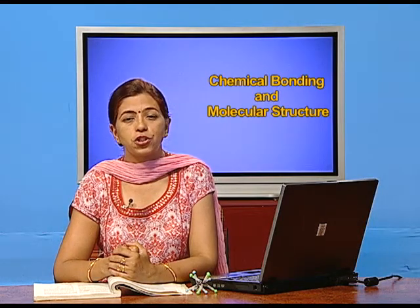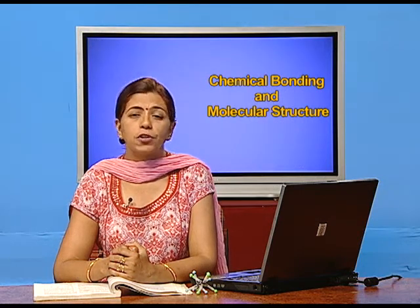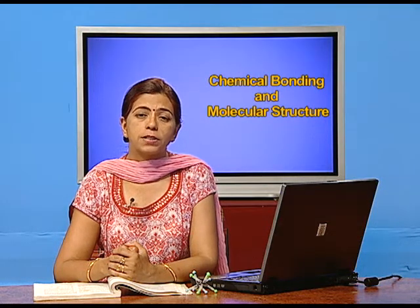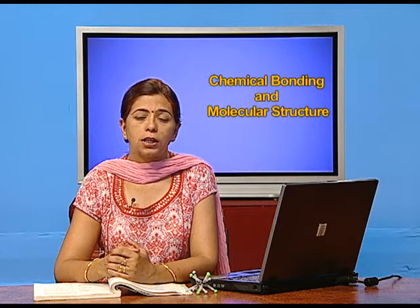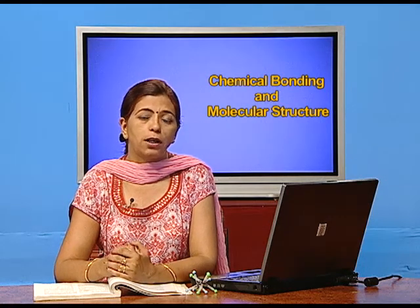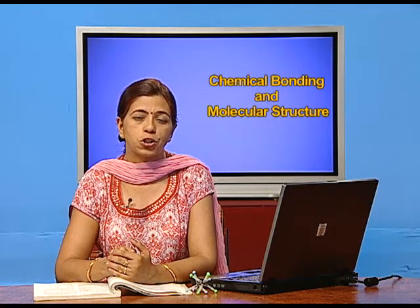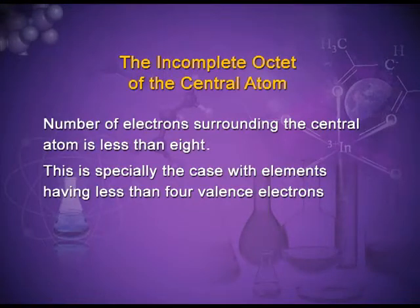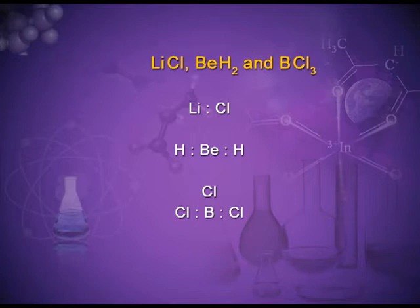Dear children, but there are limitations to the octet rule. There are many elements which cannot complete their octet, many elements which have more than eight electrons in the valence shell (known as expanded octet), and elements which have an odd number of electrons. The first exception is the incomplete octet of the central atom — the number of electrons surrounding the central atom is less than eight, especially for elements with fewer than four valence electrons. The most common examples are compounds of lithium, beryllium, and boron, where the central atom completes only a duplet.